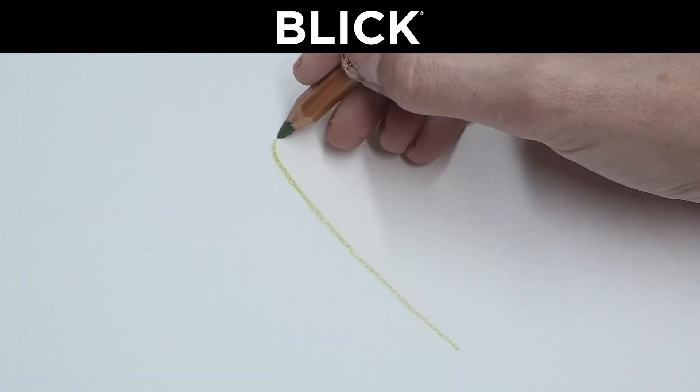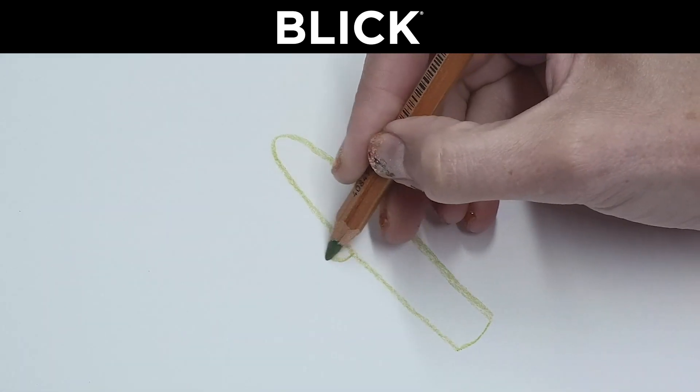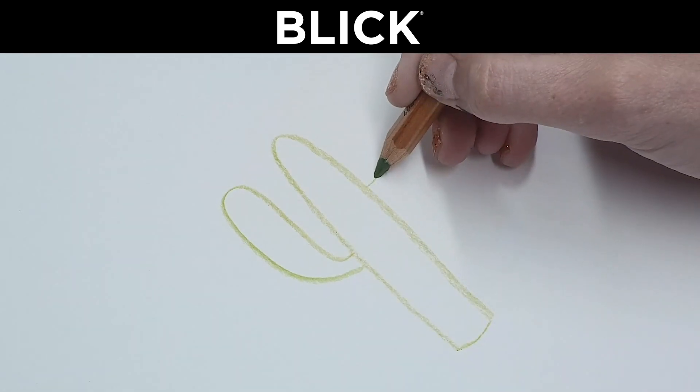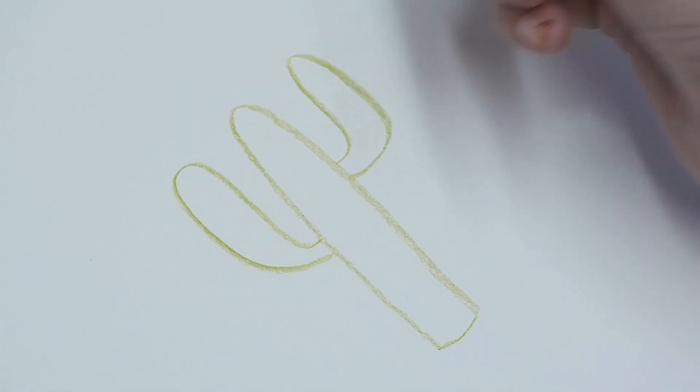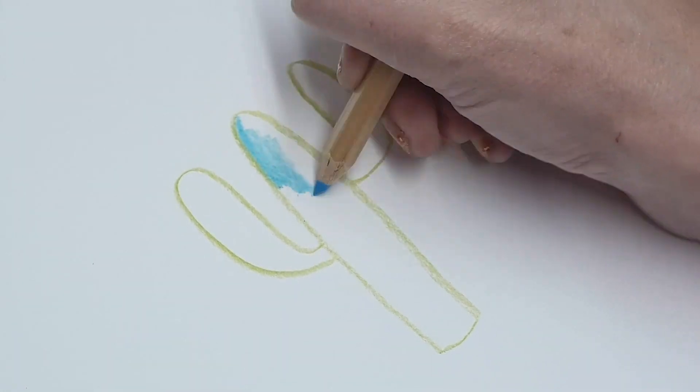Okay everybody, I'm really excited about this tutorial right now. We're gonna make a galaxy cactus. What you're gonna do is make your initial outline with the green watercolor colored pencil. You can make whatever shape you want. I'm gonna stick with this shape.